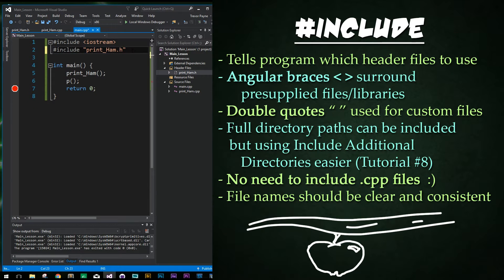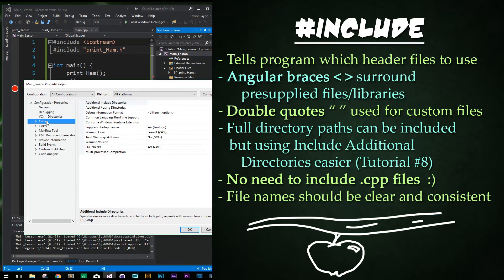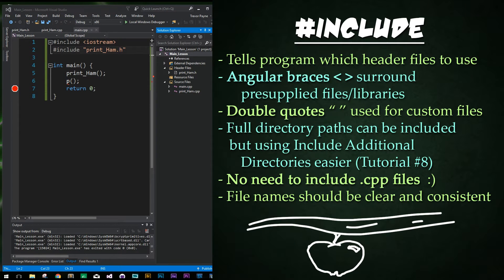It is possible to include full directory paths, but it is easier to just include additional directories as I showed you in tutorial number eight, where we go under the property pages of our project and include our additional directories. When you're creating a .h file or a header file, you will very likely need an accompanying CPP file in which you define the functions. Note that they do not have to have the same name, but I would recommend doing so for clarity.